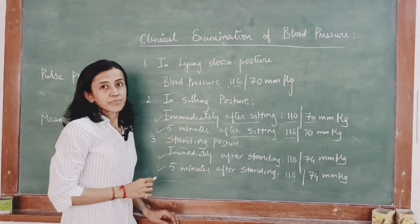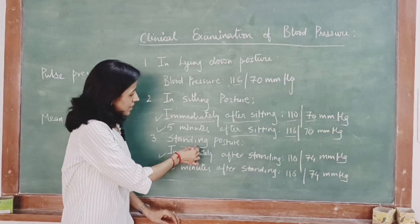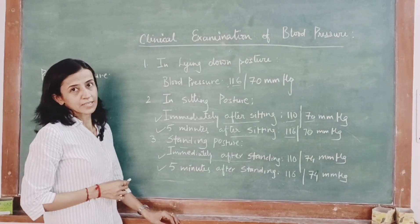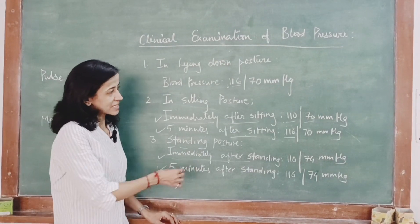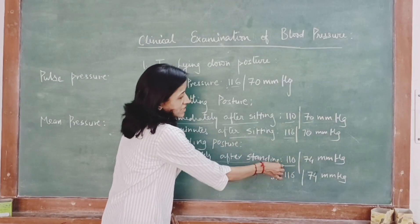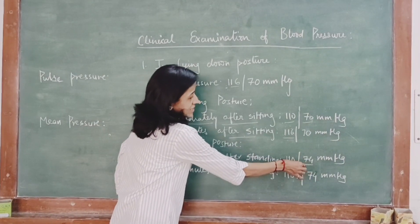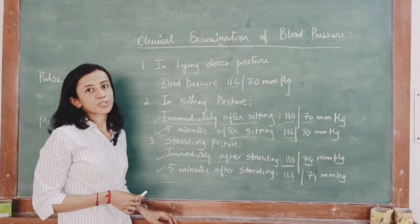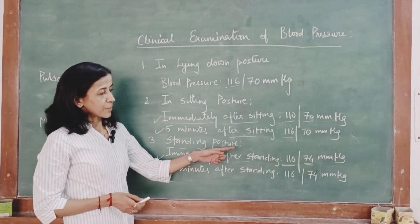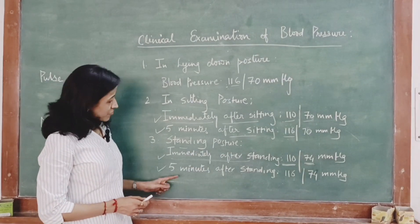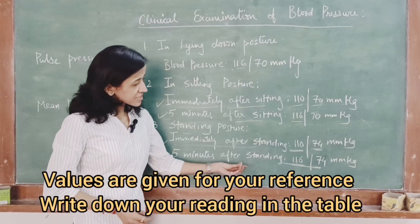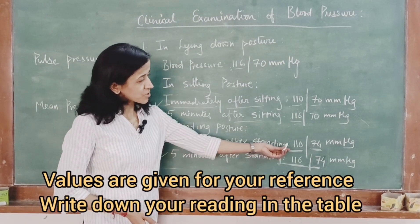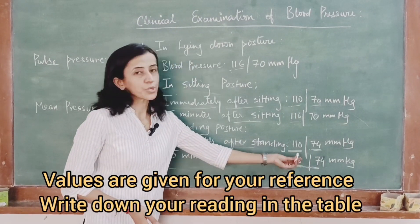When the subject is allowed to stand and we measure blood pressure immediately after standing, there is again a fall in systolic pressure and a rise in diastolic pressure. This is because of the effect of gravity and peripheral pooling of blood. Five minutes after standing, because of regulatory mechanisms, the systolic blood pressure comes back to normal.